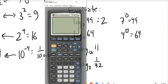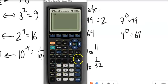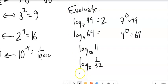If I'm not sure, how about I just check that on my calculator? 4 to the third. Yep, 64. So that must be a 3.